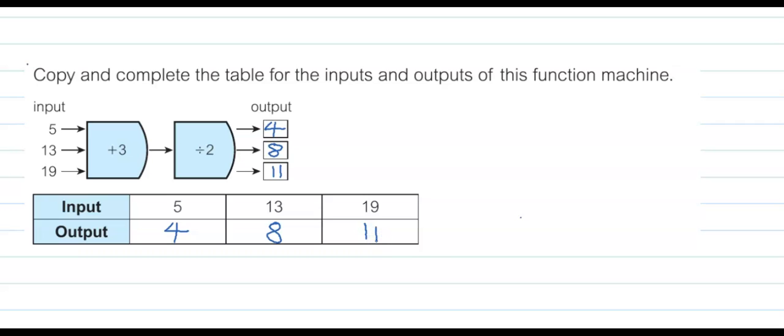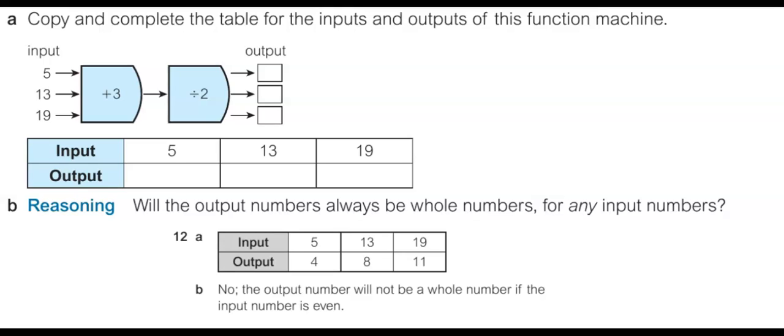Do you notice any reasoning here? For input 5, which is an odd number, we are getting 4, which is even. For input 13, also odd, we are getting 8, which is even. But for input 19, which is also odd, we are getting 11, which is an odd output. So we can notice this pattern.